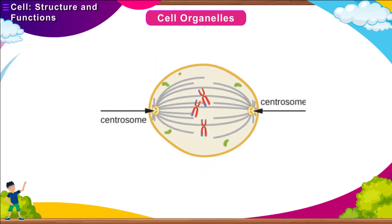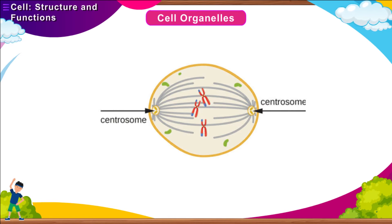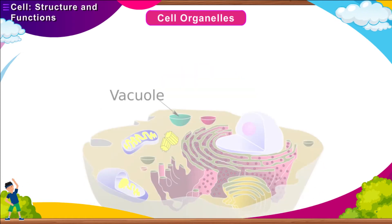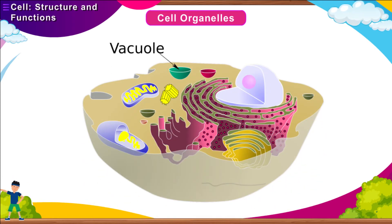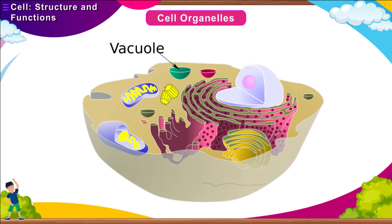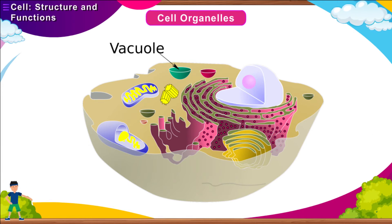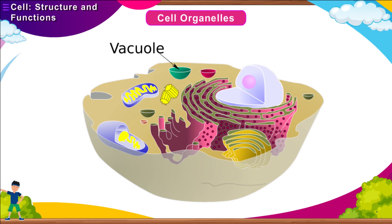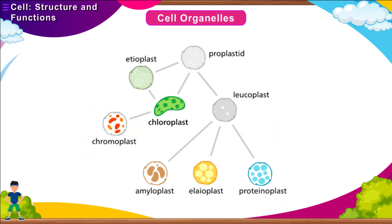Centrosomes are present only in animal cells and are responsible for cell division. Vacuoles are clear spaces surrounded by a thin membrane, responsible for storage of food. They are prominent and large in plant cells but small and not prominent in animal cells.